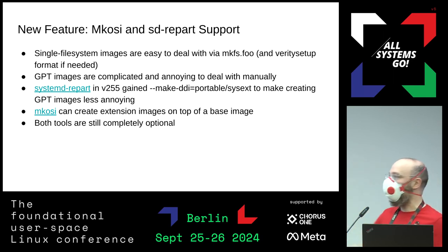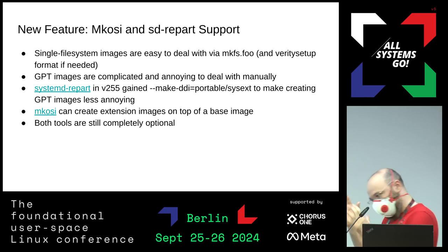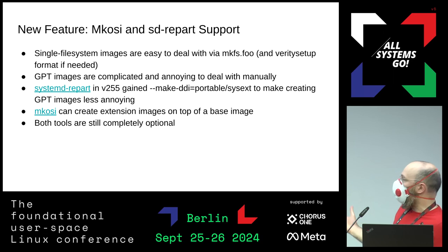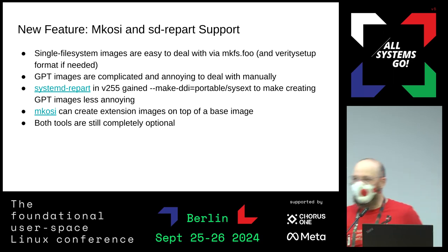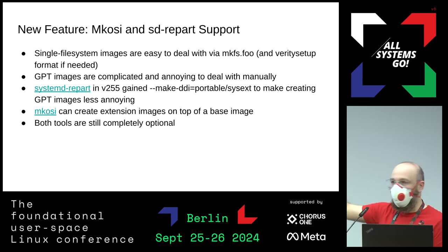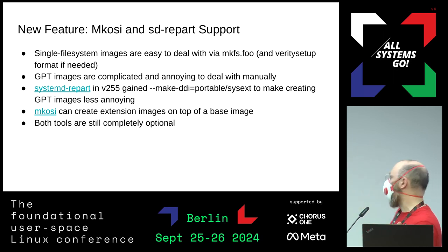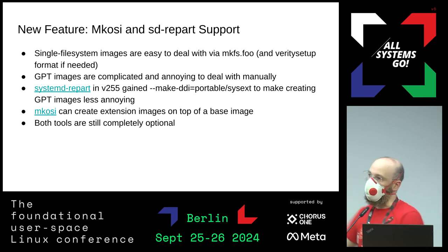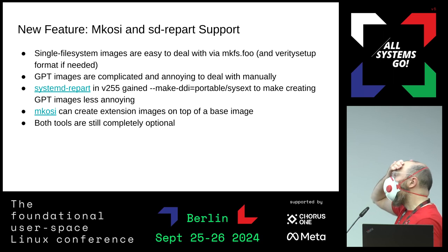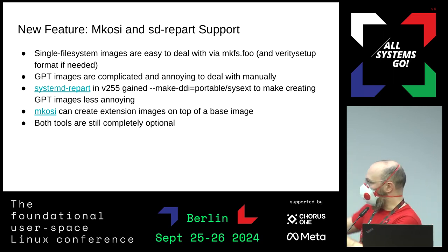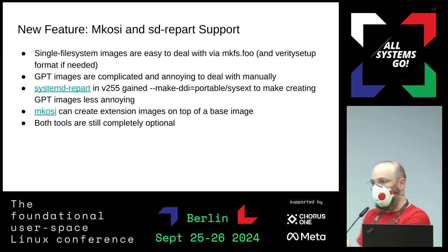How do you build this stuff? mkosi and systemd-repart support this. By design there is no prescribed way you must build these images. For a single-filesystem image — SquashFS or UFS — it's kind of trivial: build a directory, run mksquashfs, and maybe verity-setup format. For GPT images it's more involved because you need a partition table. In systemd-repart 255 you can just do make-ddi equals portable or sysext and it handles the GPT magic for you. mkosi can also create extensions on top of base images — you configure it appropriately and it will create a base image and sysext which you can deploy as a stacked portable service.